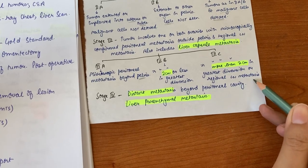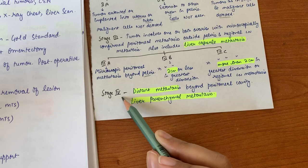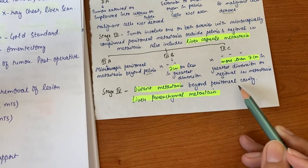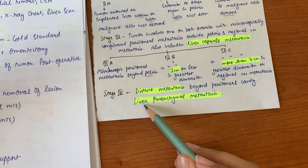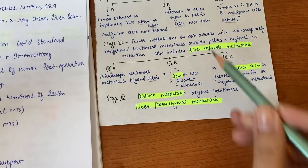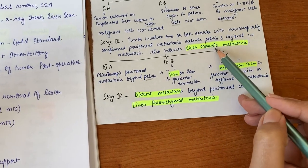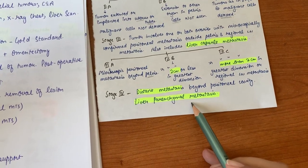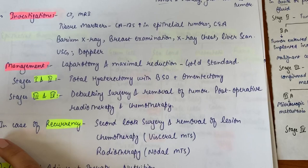The last one is stage four. In stage four we have distant metastasis that occurs beyond the peritoneal cavity or beyond the ovaries. Here we have liver parenchymal metastasis. In stage three we just had capsule metastasis, but in stage four liver parenchyma is also metastasized.